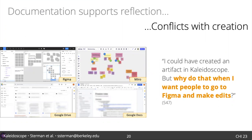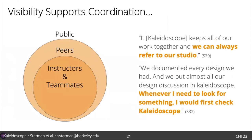However, having a specialized tool resulted in a tension with creating content. Students frequently used Kaleidoscope to leave feedback and critique, but creating an artifact made it a static record of a moment in time, not a living document to be edited. Why create an artifact in Kaleidoscope when you want your teammates to go to Figma and make edits? In retrospect, students wished they had made more intermediate artifacts, but the pressures of the course and the division between tools created resistance in the moment.